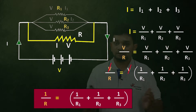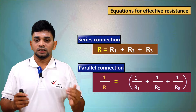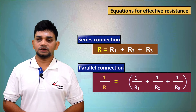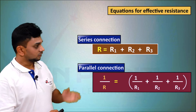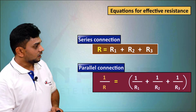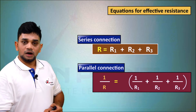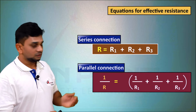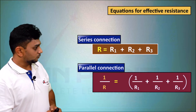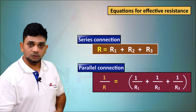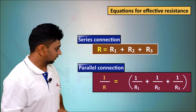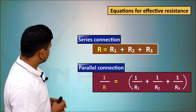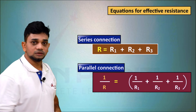These are the equations for effective resistance. Series connection: R = R1 + R2 + R3. Parallel connection: 1/R = 1/R1 + 1/R2 + 1/R3. These are the two equations. Now we are going to discuss some numericals related to these equations.